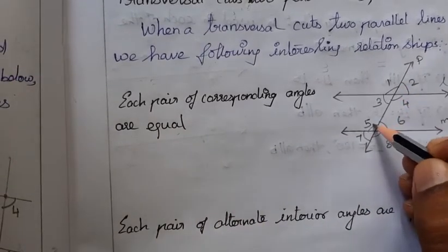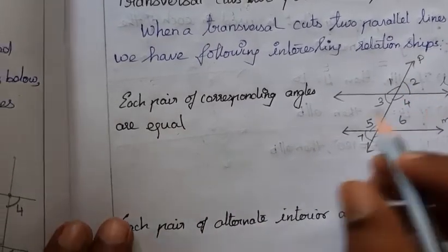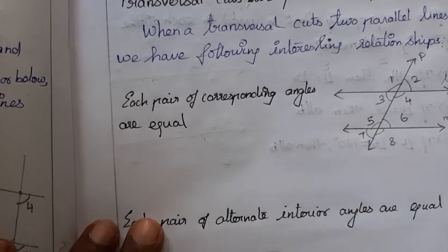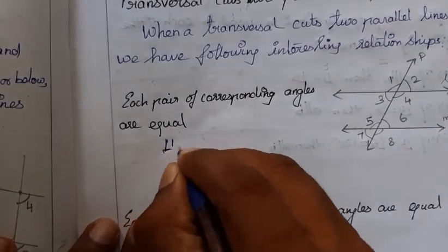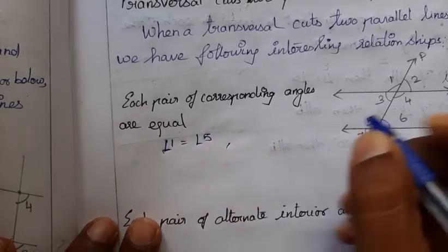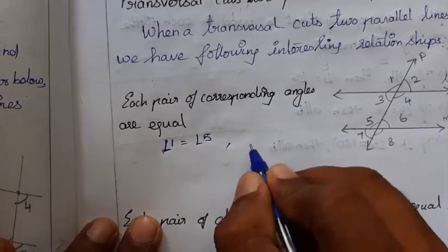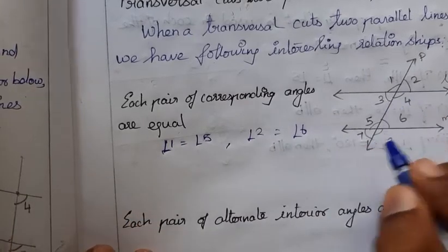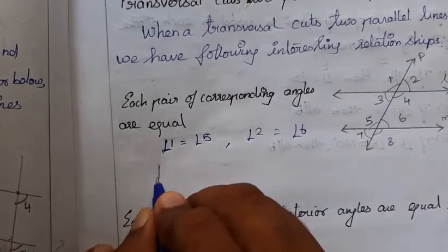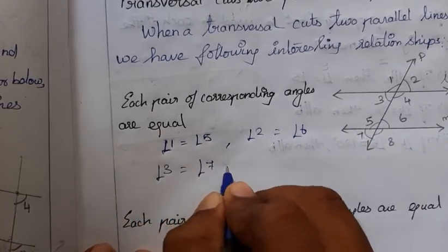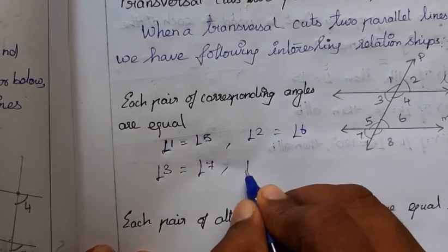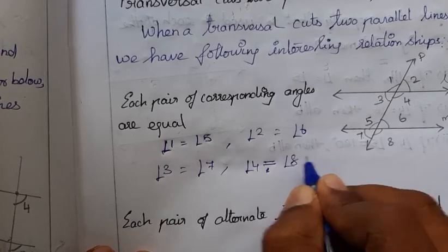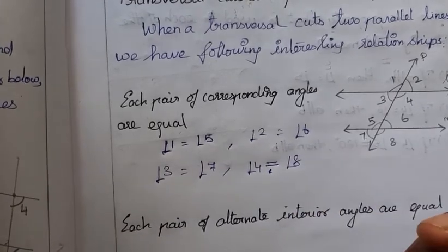Since corresponding angles are: 1 and 5, angle 1 equals angle 5; 2 and 6, angle 2 equals angle 6; 3 and 7, angle 3 equals angle 7; and 4 and 8, angle 4 equals angle 8. This applies only when the transversal cuts parallel lines — be very careful about this.